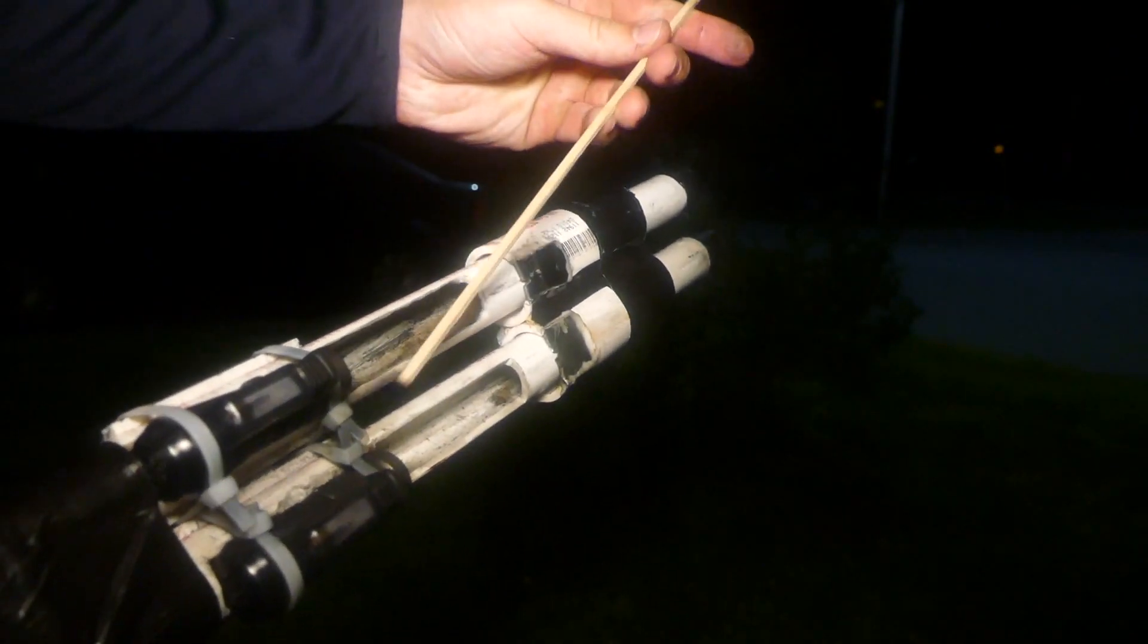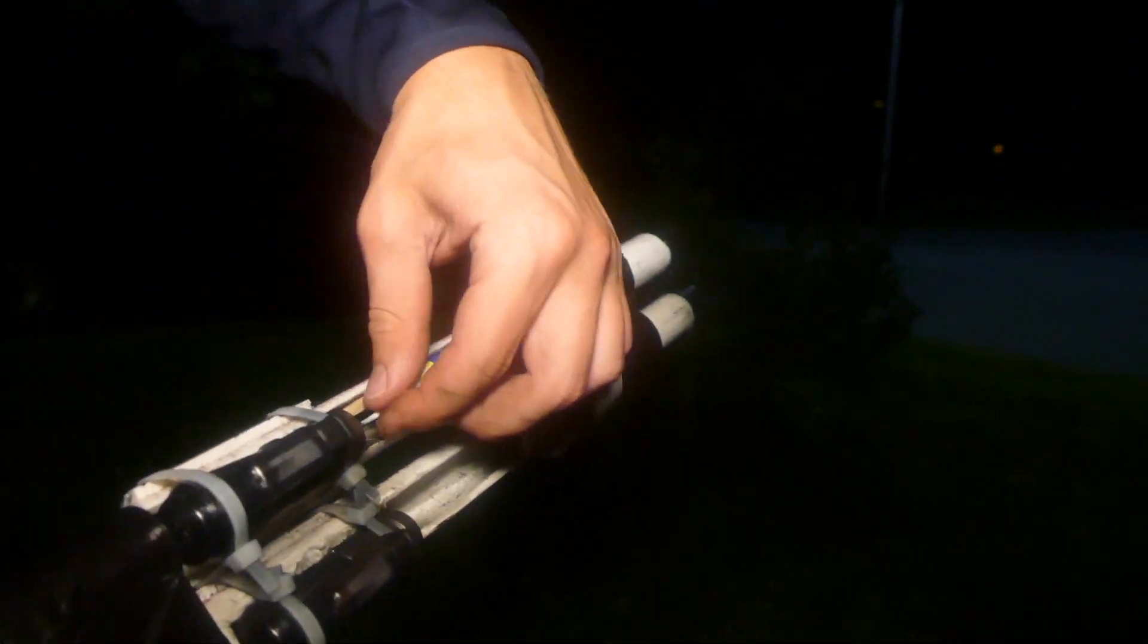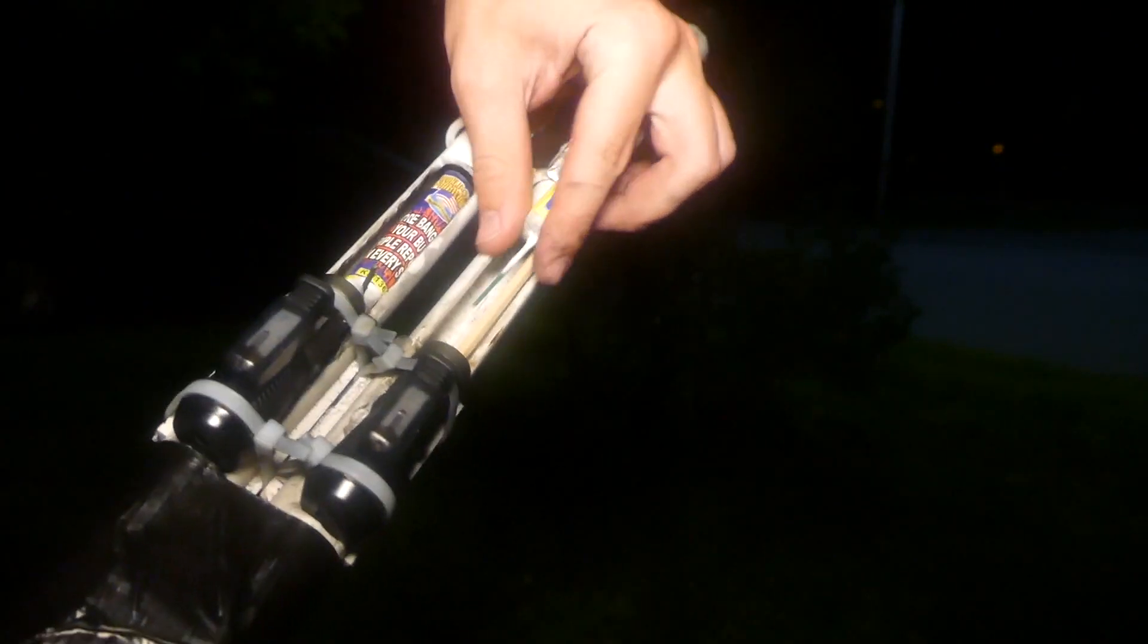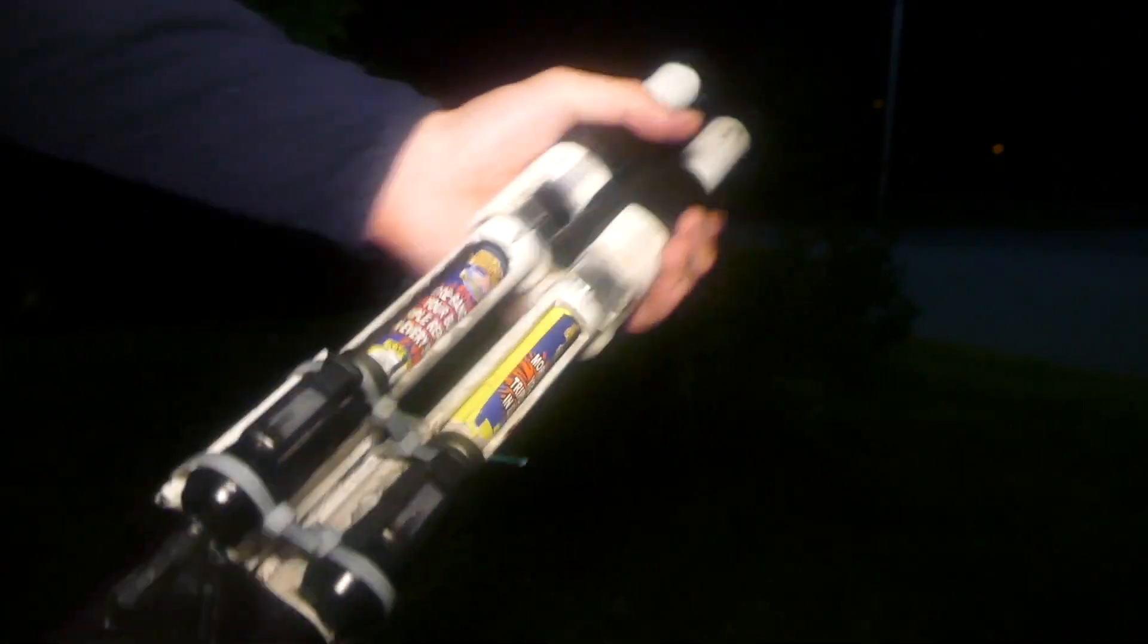So to load it, all we have to do is pull back on the breaching cover, load in the rockets, and pull up the fuses a little bit. Then close it up, and we're good to go.